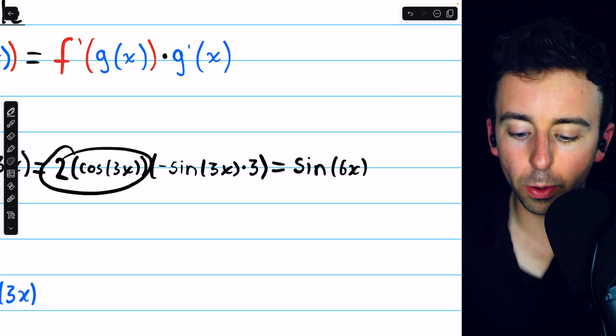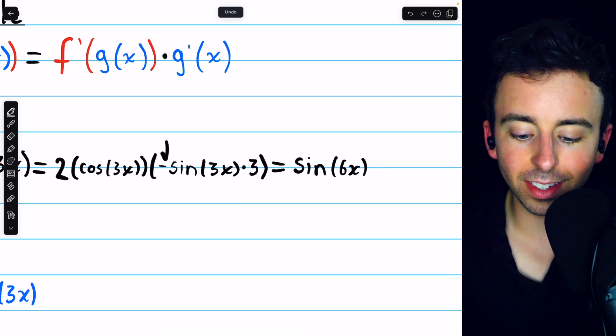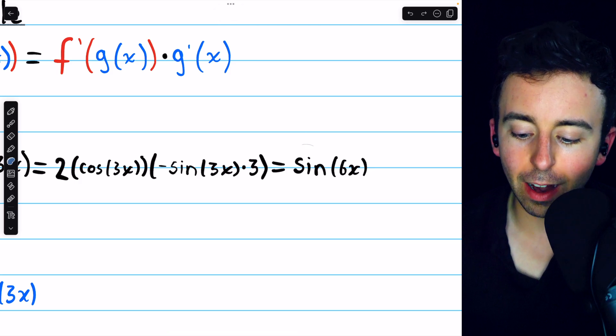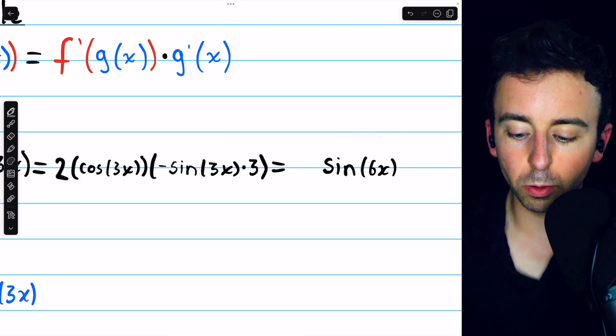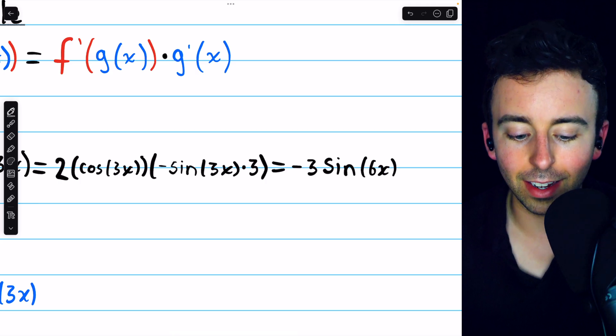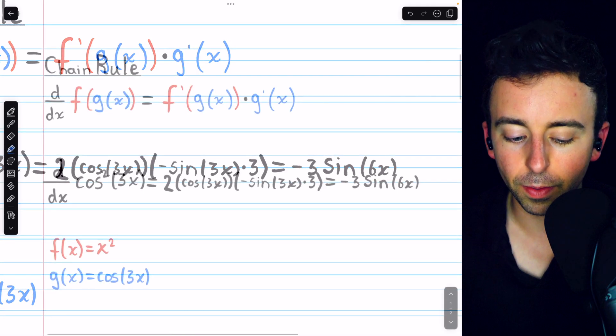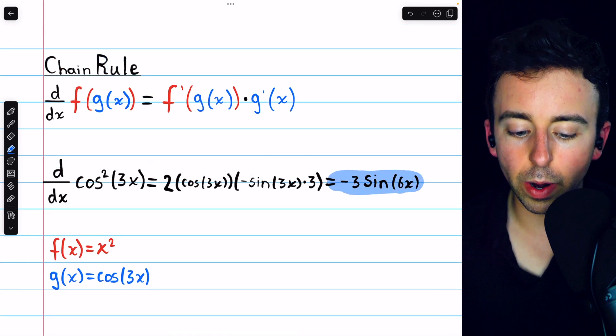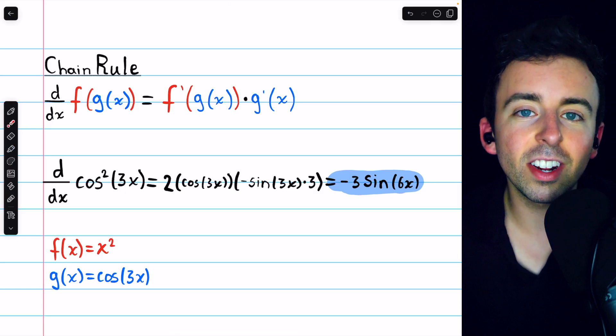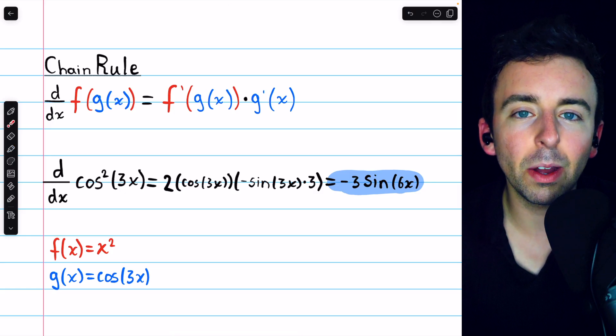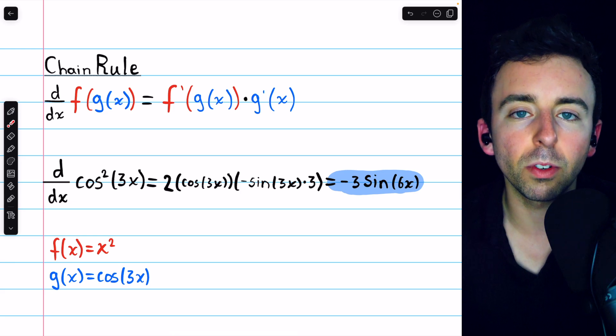We used the 2, the cosine, and the sine, but that still leaves the negative 3. So let's just bring that right in front of the sine function. We'll write this as negative 3 sine of 6x. And that is a pretty nice final answer. So that's the derivative of cosine squared of 3x. Let me know in the comments if you have any questions, and be sure to check out my Calculus 1 course and Calculus 1 exercises playlists in the description for more.